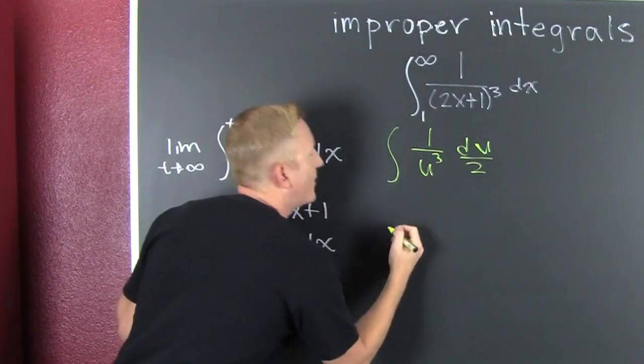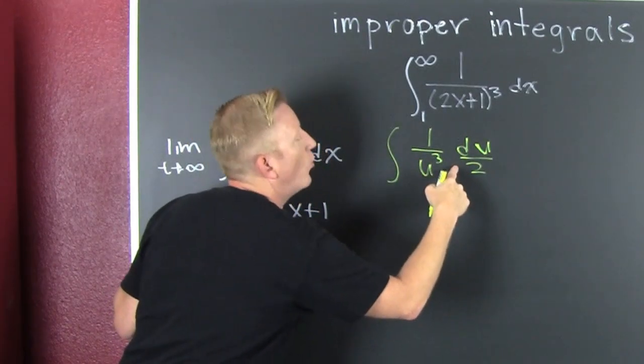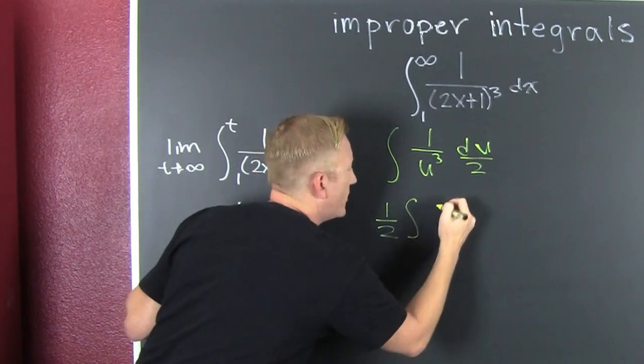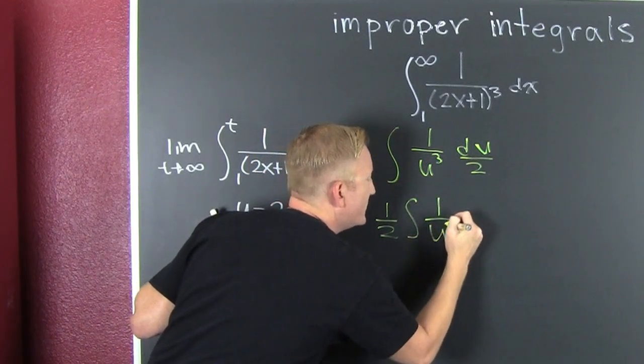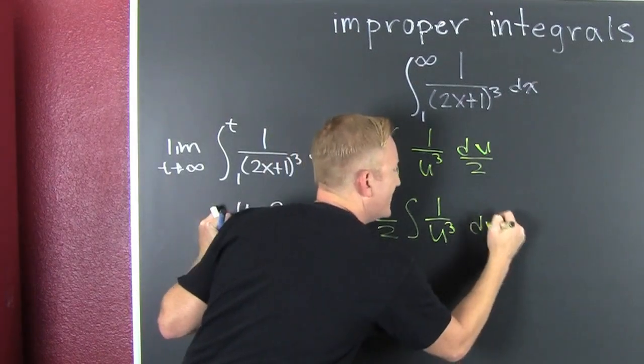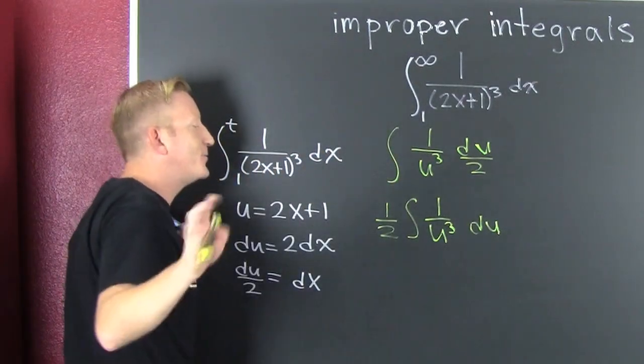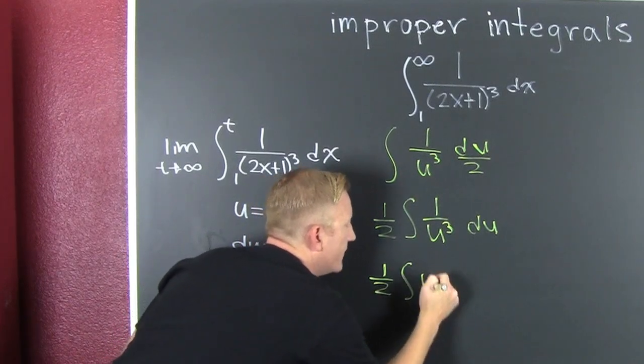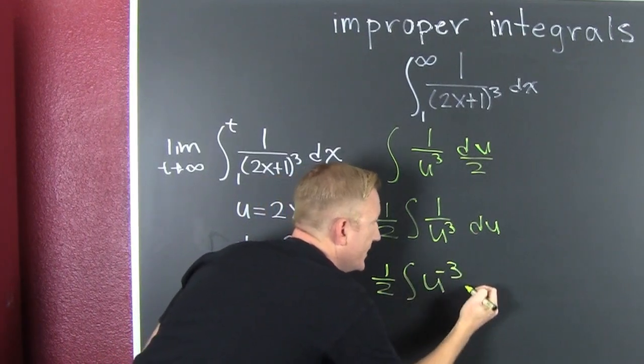So let's pass that out front. This is one half of du. So I'm just going to call that one half of the integral of 1 over u to the third du. So then this is one half the integral of u to the minus 3 du.